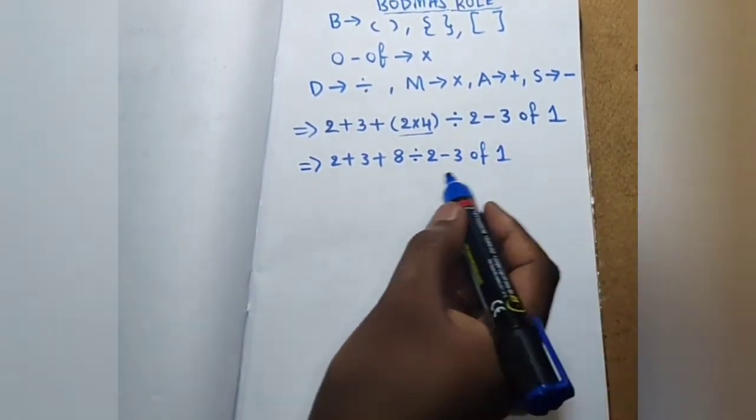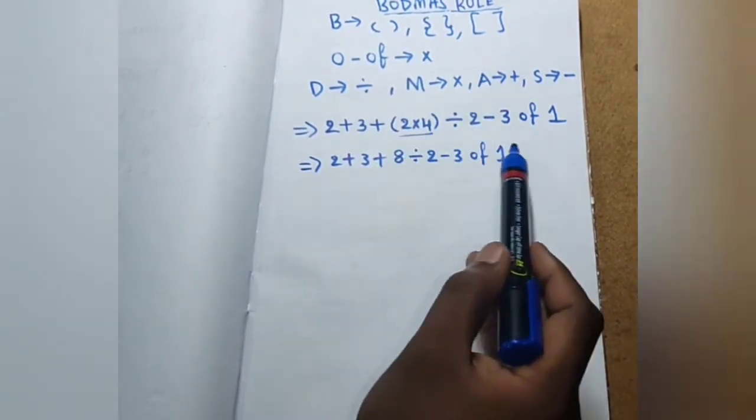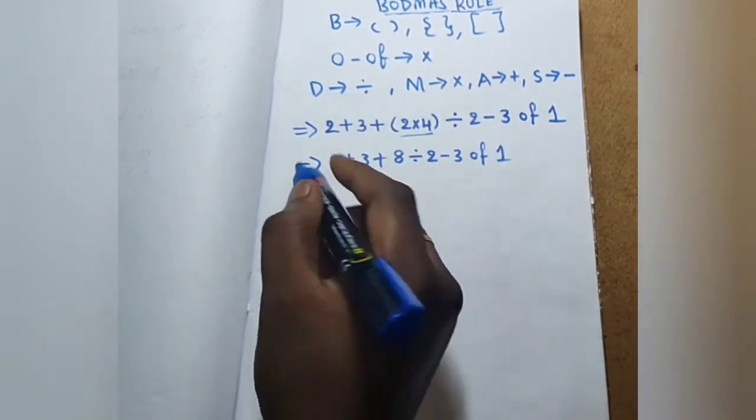Ok now. Next we follow BODMAS rule. Next brackets again. Of is nothing but multiplication.